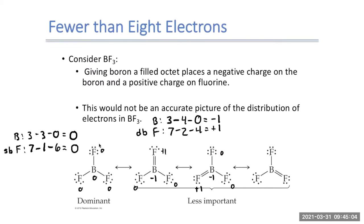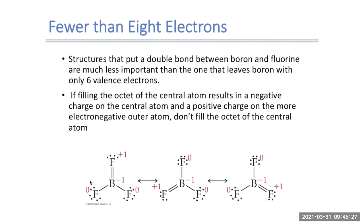We always want the structure with the lowest number of formal charges. Sometimes filling the octet of the central atom results in a negative charge on that central atom and a positive formal charge on the more electronegative outer atom. If that happens, it's best not to fill the octet of the central atom — fluorine is highly electronegative, it wants electrons and does not want a formal charge of plus one indicating electron deficiency.